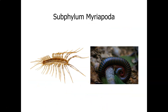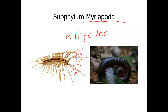The subphylum Myriapoda includes the millipedes. You can identify a millipede by looking at the body segments — it has two pairs of legs per segment. Millipedes have two sets of legs per segment, whereas centipedes have only one set per segment.